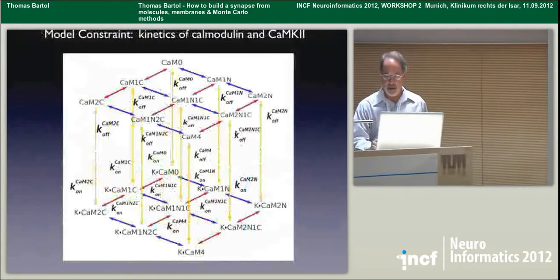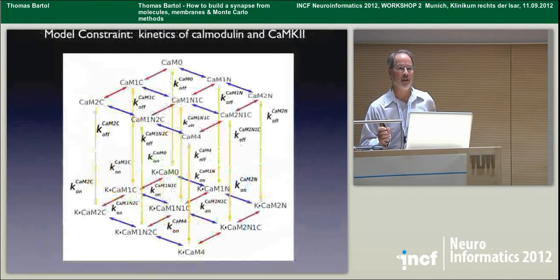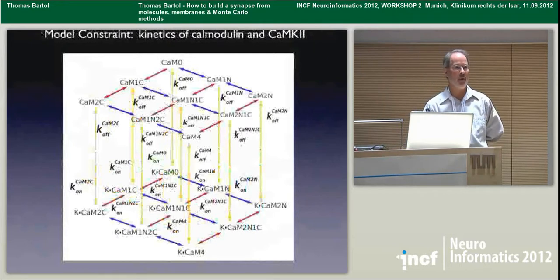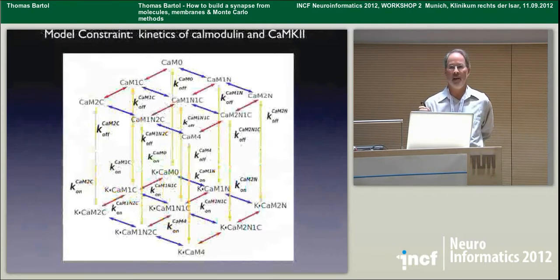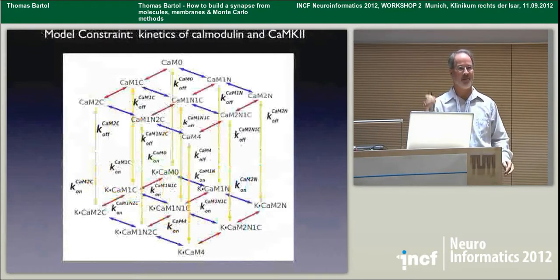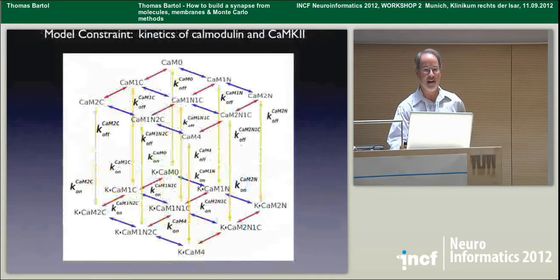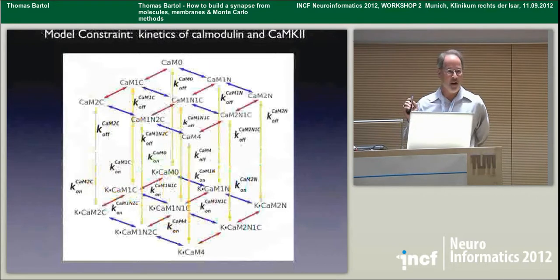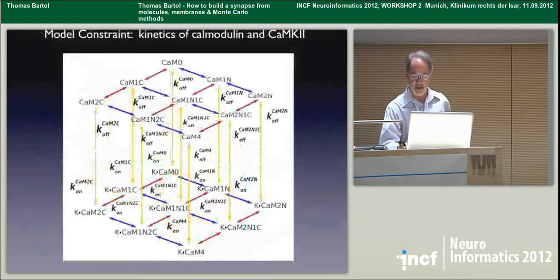Traditional modeling methods using differential equations, and even the Gillespie algorithm, require you to calculate a propensity function and map out a matrix representing your system of simultaneous differential equations, then diagonalize that to find the eigenvalues on every time step. Simulating a molecule like CaMKinase 2 or the active zone is prohibitively expensive and even intractable with these approaches.